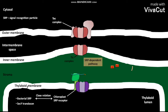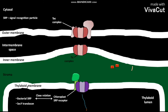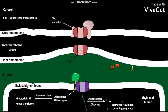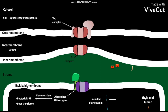The chloroplast SRP receptor mediates the movement of the plastocyanin protein to the thylakoid lumen. After reaching the thylakoid lumen, the plastocyanin protein undergoes cleavage to produce an unfolded plastocyanin protein and a removed thylakoid targeting sequence. This cleavage process is catalyzed by endoprotease. The unfolded plastocyanin protein then undergoes folding to form mature plastocyanin.